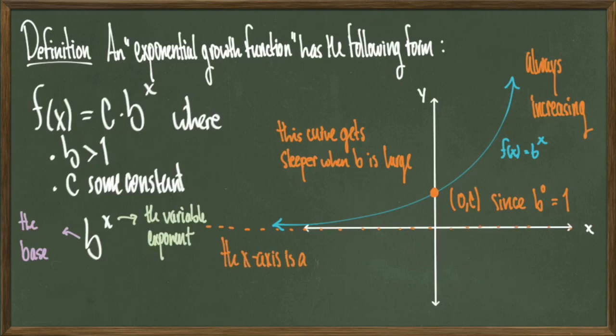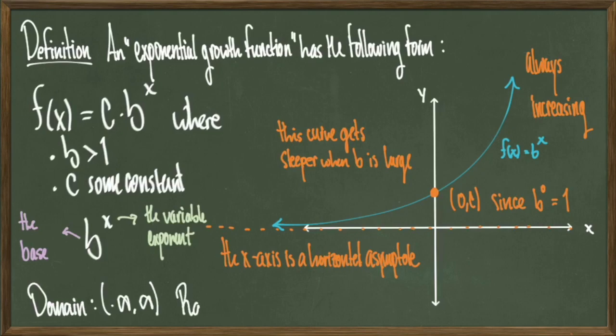These functions also have the x-axis as a horizontal asymptote. So if we follow our graph to the left, we notice that it will never touch the x-axis. It will always stay somewhat above it. Therefore, our domain for this function will be all real numbers, because there's no number that I can't take a power of, and our range will be (0,∞), again because f(x) will never equal 0 exactly.